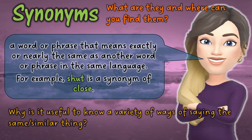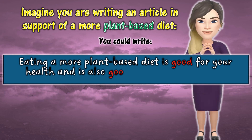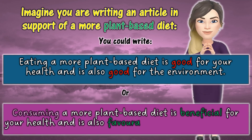Why is it useful to know a variety of ways of saying the same or similar thing? Let's think about this while considering an exam question. Imagine you're asked to write an article in support of a more plant-based diet. You could write: 'Eating a more plant-based diet is good for your health and is also good for the environment.' Or: 'Consuming a more plant-based diet is beneficial for your health and is also favourable for the environment.' Rather than repeating the word 'good', I have chosen synonyms — beneficial and favourable — to create a more precise and more engaging piece of text. This is why it's good to have a broad vocabulary.